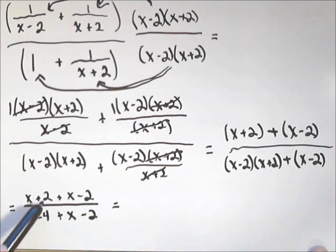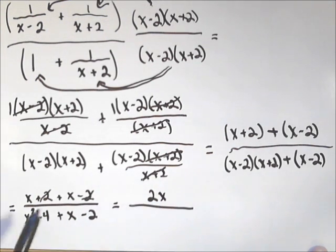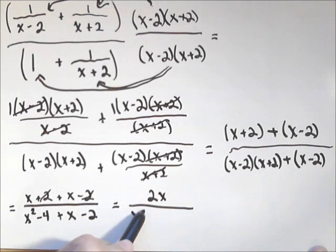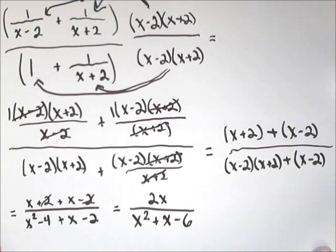Now, I'm gonna combine like terms. A positive two and a negative two will cancel. So, in the numerator, I get left with a two x. In the denominator, I got x squared plus x minus six. And that is as simplified as we are gonna get.